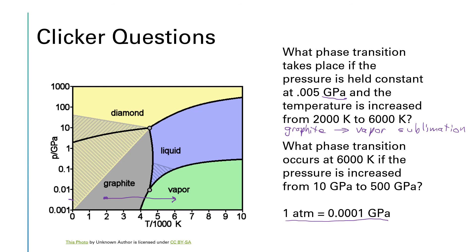The next question wants to know, what phase transition occurs at 6,000 Kelvin if the pressure is increased from 10 gigapascals to 500 gigapascals? So at 6,000 Kelvin, if we start at about 10 gigapascals, we're about here in the liquid region. And if we move up to 500 gigapascals, we'll be somewhere up here in the diamond region. So we just made diamonds.